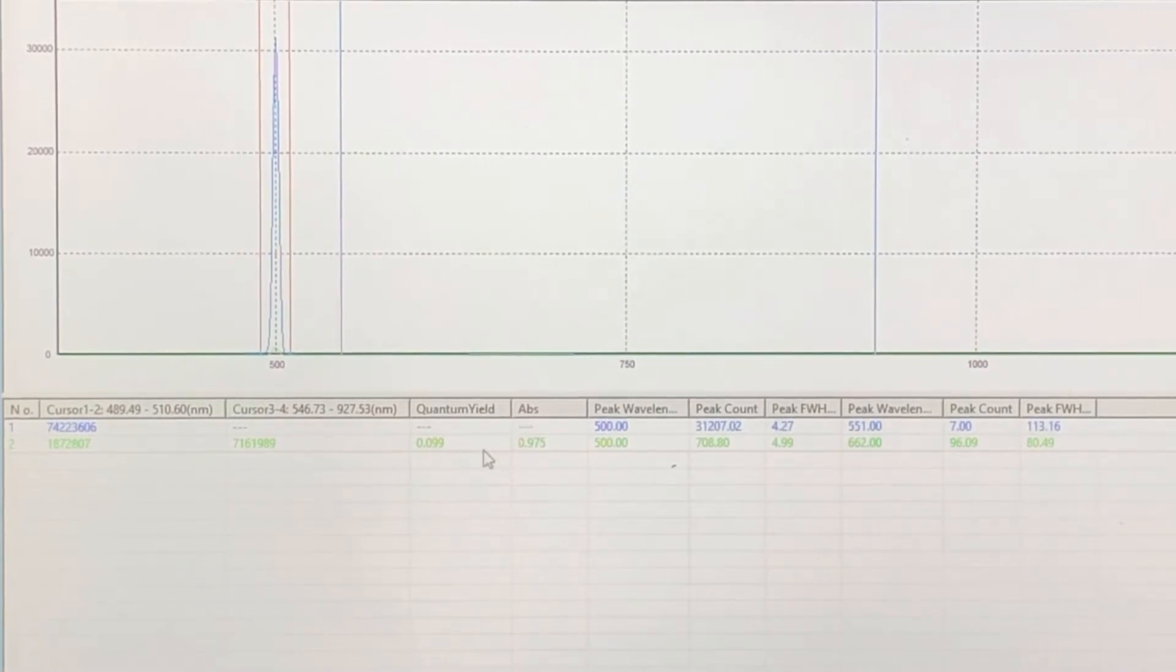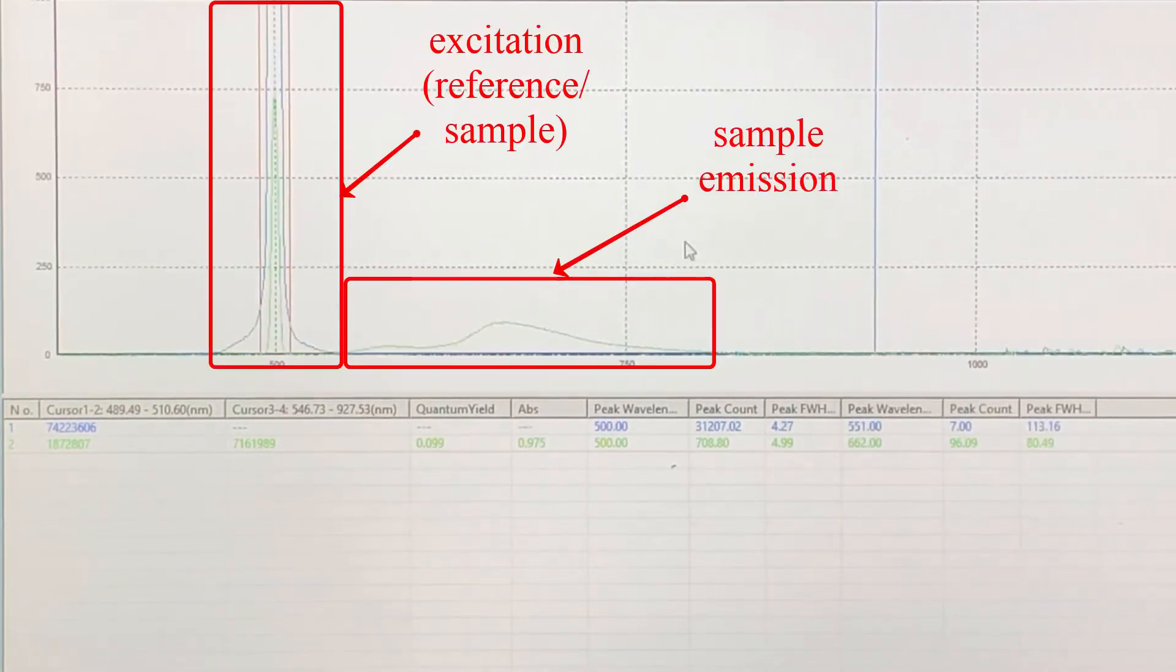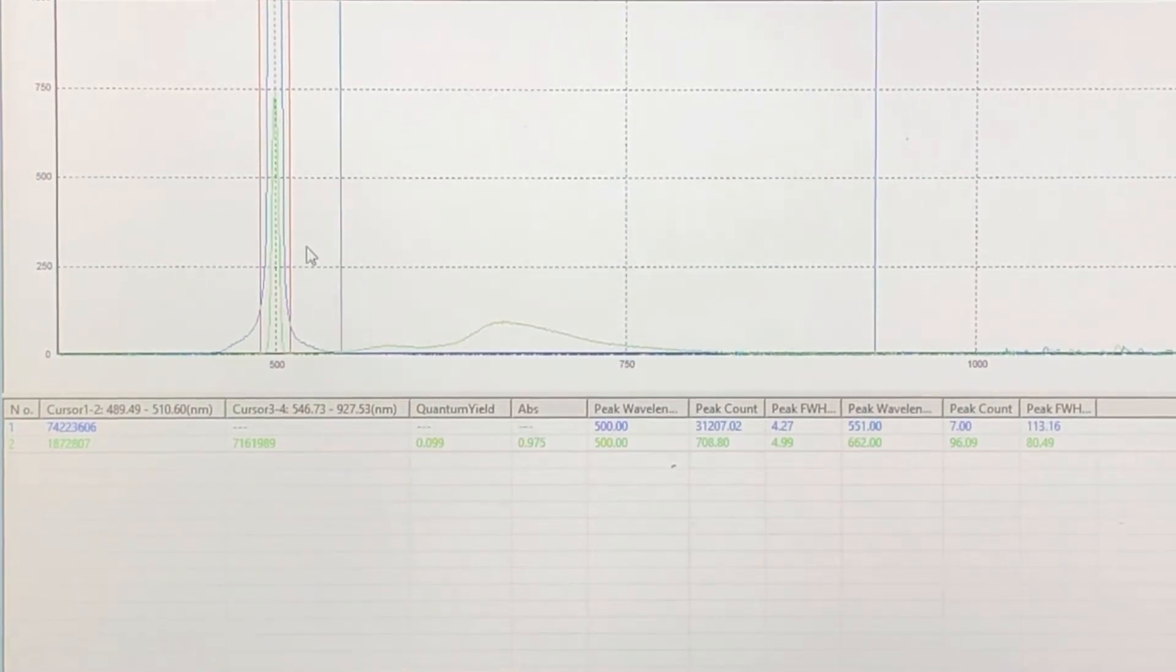After the reference is measured, the quantum yield is automatically calculated and you'll see it on the bottom line. Let's zoom in to get a better look at the data. Now you can see the excitation peaks from the reference and sample on the left, as well as the sample emission peak on the right.